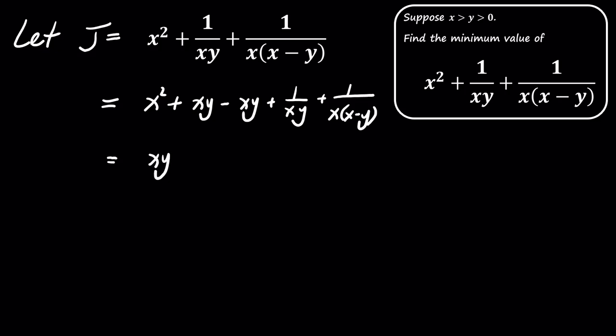We have now split the expression into two parts, which will allow us to apply the arithmetic mean-geometric mean inequality, also known as the AM-GM inequality.